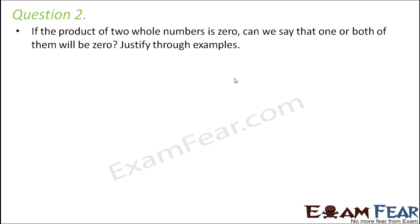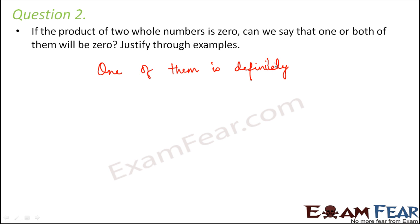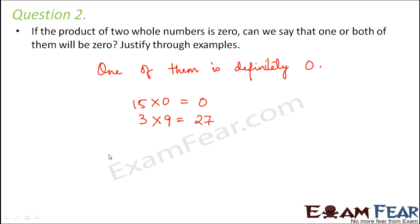Question number two: if the product of two whole numbers is zero, can we say that one or both of them will be zero? Justify through examples. If the product is zero, that means one of them is definitely zero, because anything multiplied by zero gives zero. If none of them are zero, the product will never be zero, since two non-zero numbers multiplied can never give zero.